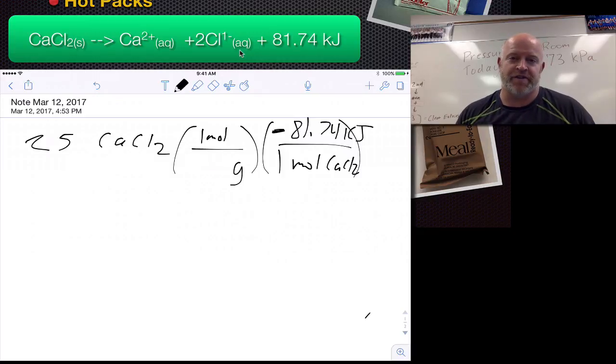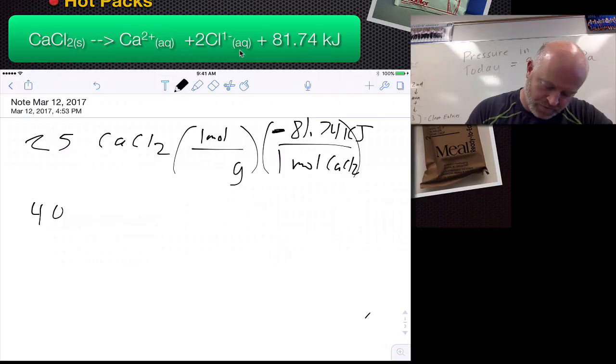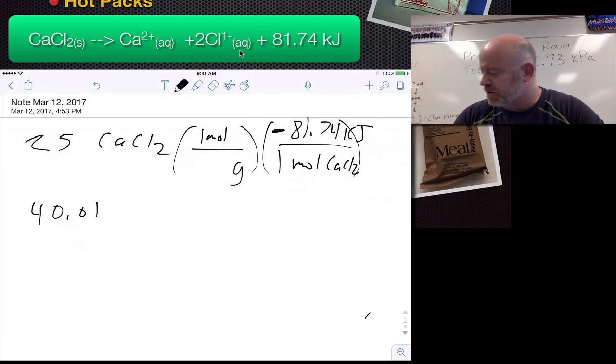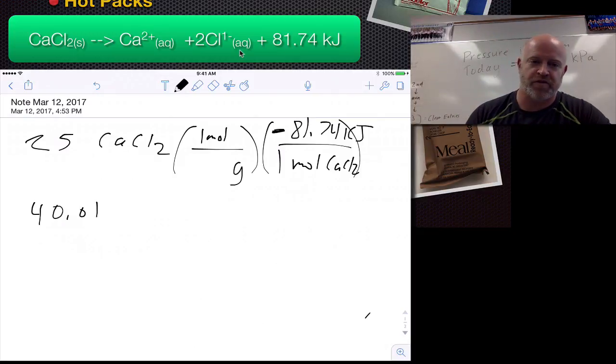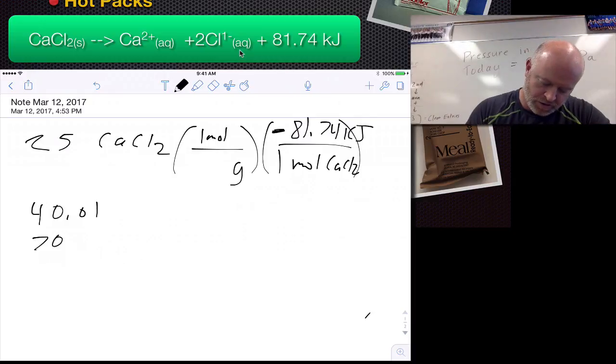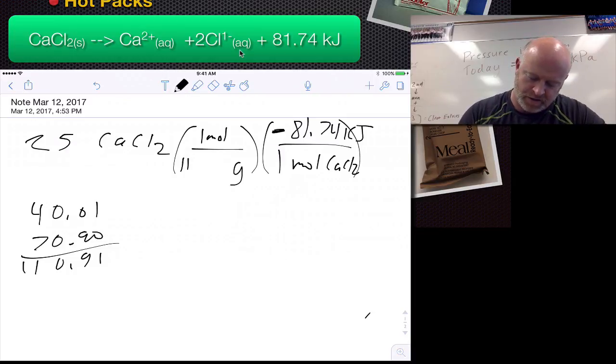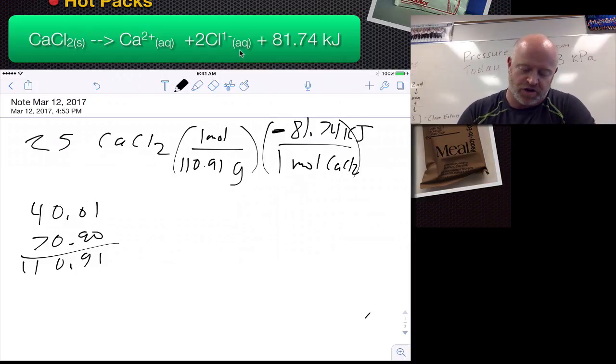To figure out that molar mass: calcium has a mass of 40.01 and chlorine is 35.45, but that's two, so that's 70.90. We've got 110.91. If I'm going to dissolve 25 grams of calcium chloride, we can actually solve for how much energy that would make.